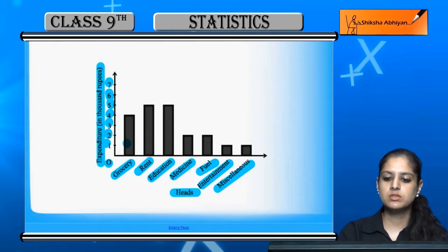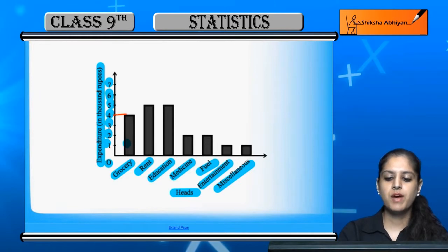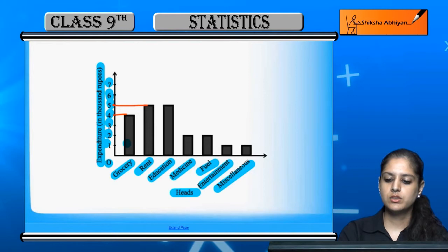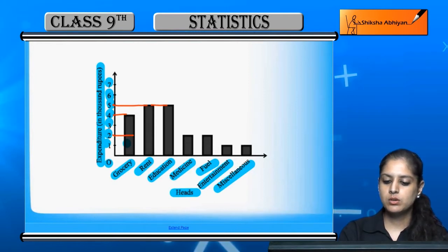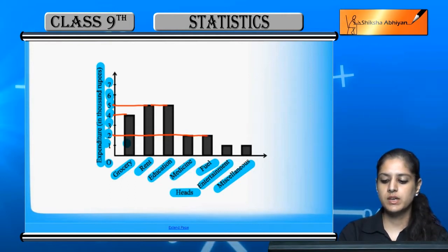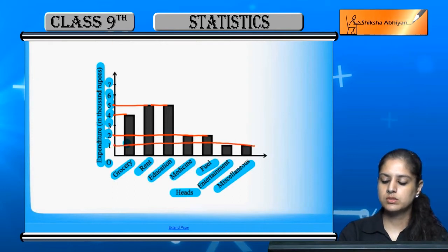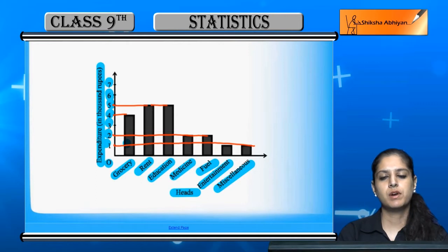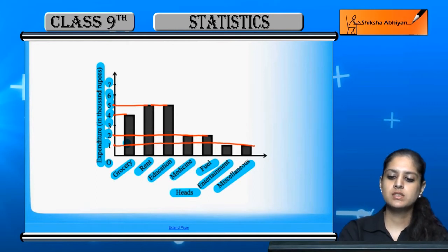Grocery was 4,000 rupees, so that bar has height 4. Rent was 5,000, so that bar is 5. Education was 5,000, so that bar is 5. Medicine was 2,000, so that bar is 2. Fuel was 2,000, so that bar is 2. Entertainment and miscellaneous were 1,000 each, so those bars are 1 each. In this way, we can represent the complete bar graph.